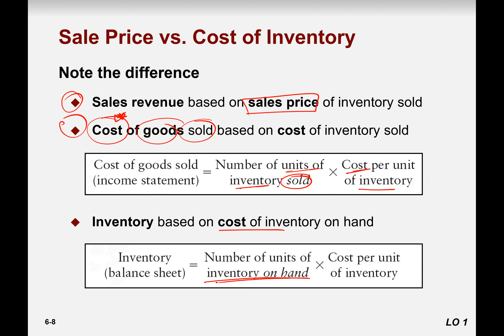Inventory on the balance sheet is the inventory on hand — not yet sold — multiplied by cost per unit. The difference between inventory and cost of goods sold is: inventory quantity is the quantity not sold and is reported on the balance sheet, while the sold quantity is reported on the income statement as cost of goods sold.